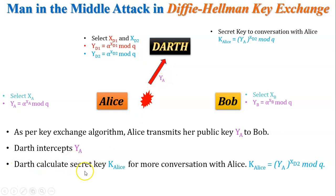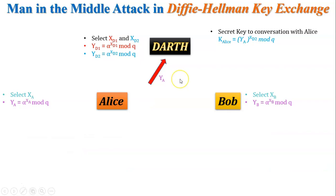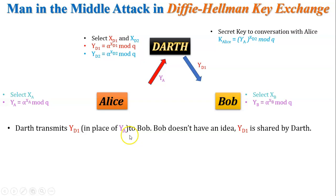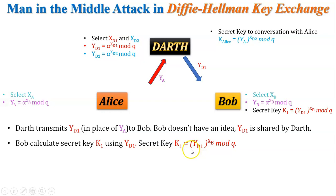Based on y_a, Darth calculates secret key k_Alice for further conversation with Alice: k_Alice = y_a^(x_d2) mod q. Now you can see this equation. Darth then transmits y_d1 in place of y_a to Bob, so Bob receives y_d1 but considers it to be y_a. Bob then calculates his secret key k1 = y_d1^(x_b) mod q using the intercepted value. Darth also transmits Bob's public key y_b back to participate. Now Bob transmits his public key y_b to Alice.